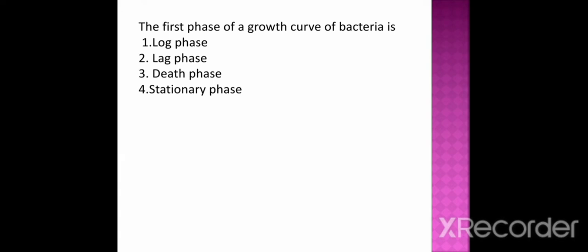The first question is: the first phase of a growth curve of bacteria is option 1 log phase, option 2 lag phase, option 3 death phase, option 4 stationary phase. And the correct option is lag phase.